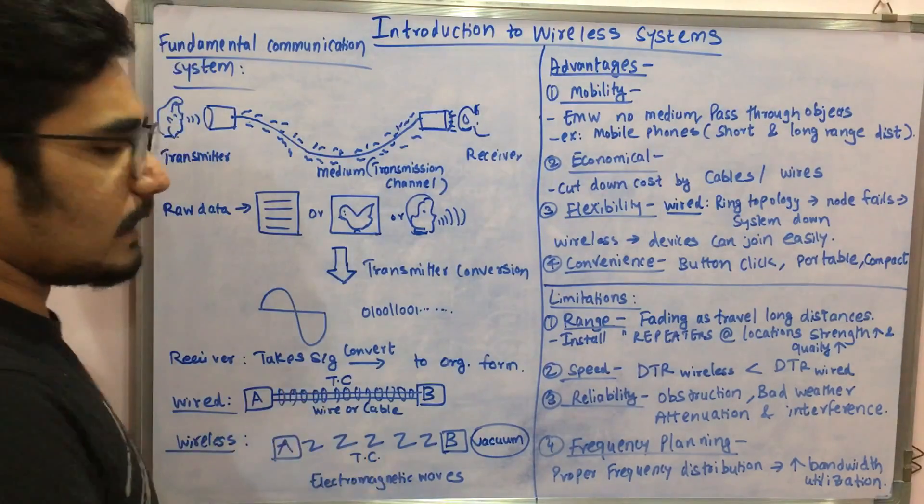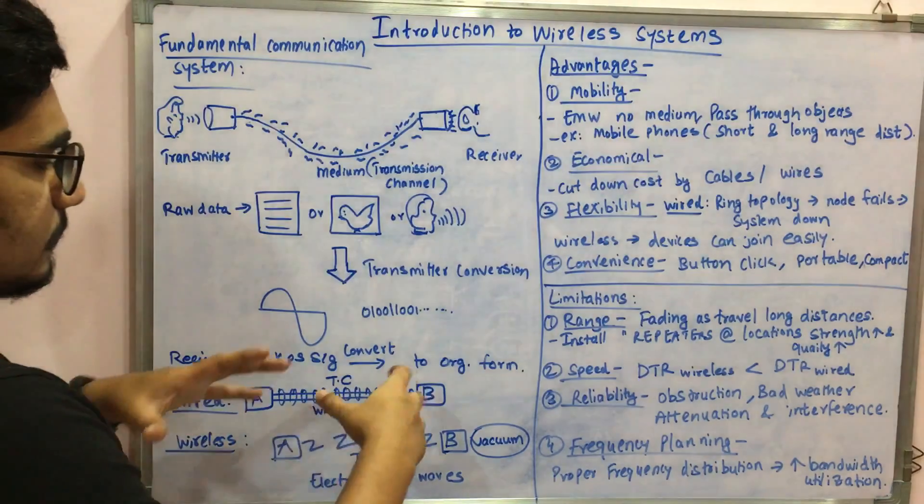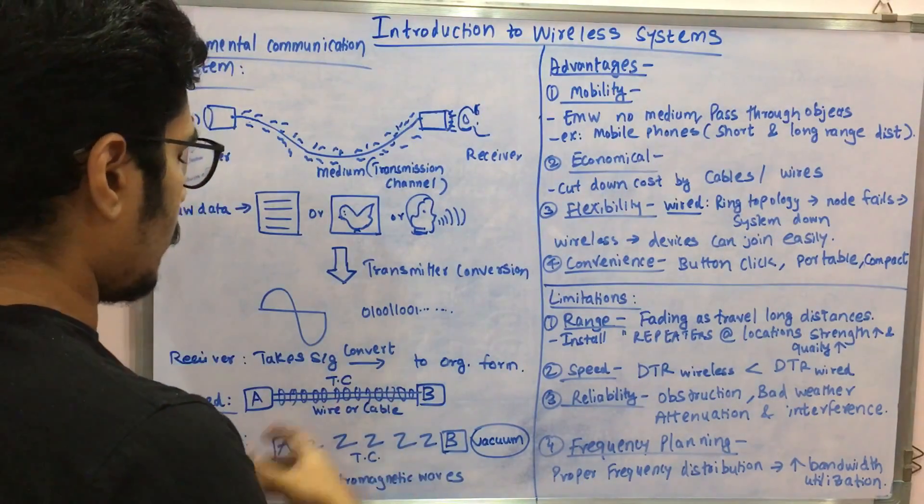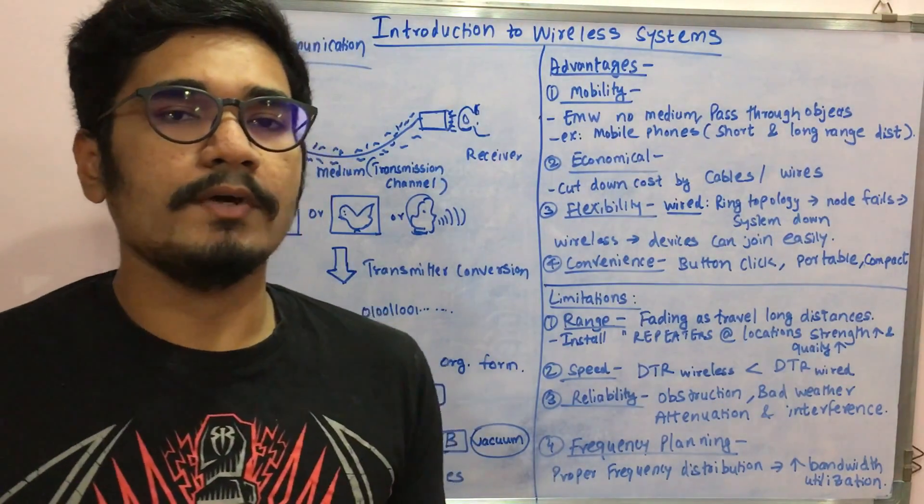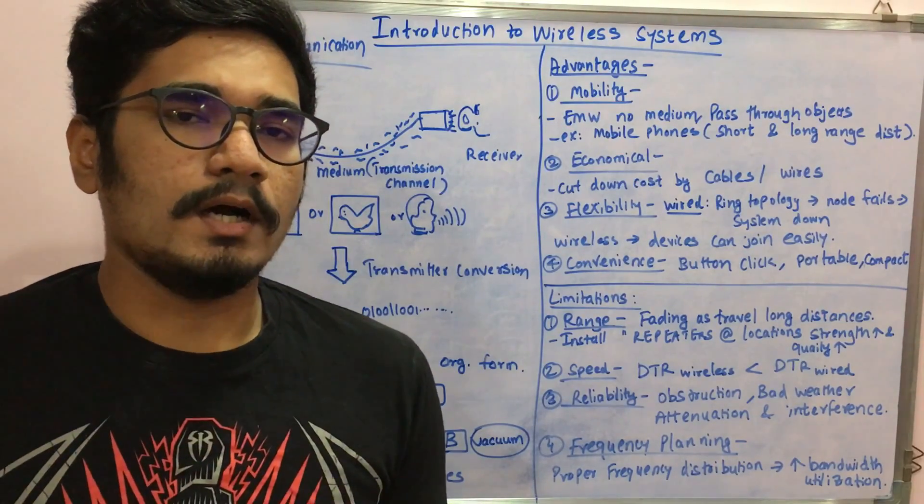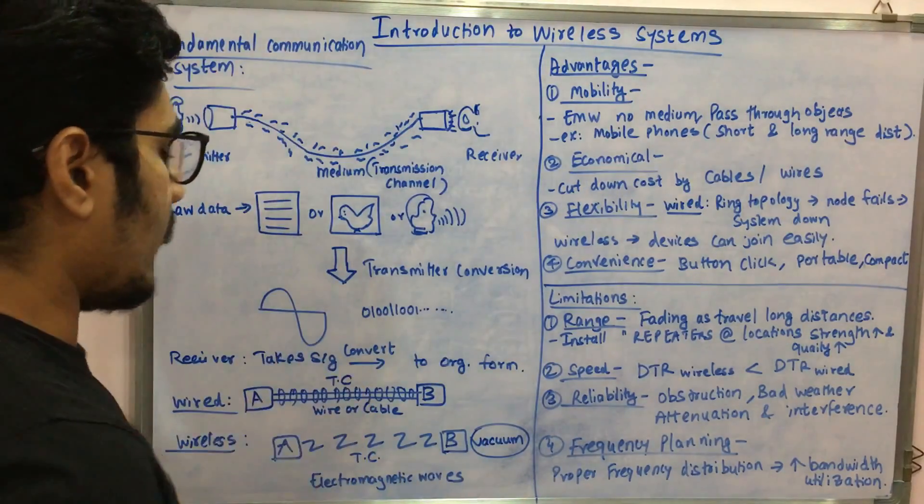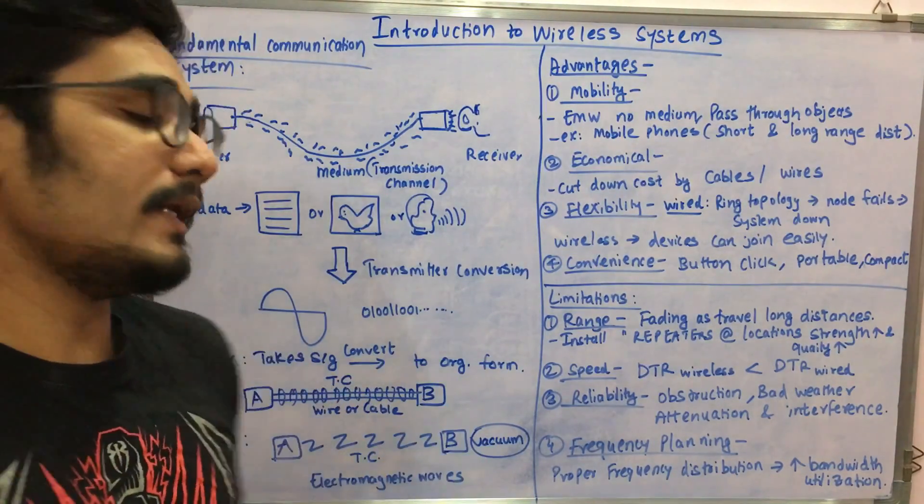Now in wireless system what happens is this physical cable is removed and you have some other kind of systems where it would be transmitting some kind of signals or waves. Those waves in wireless systems are called electromagnetic waves, that is EMW.